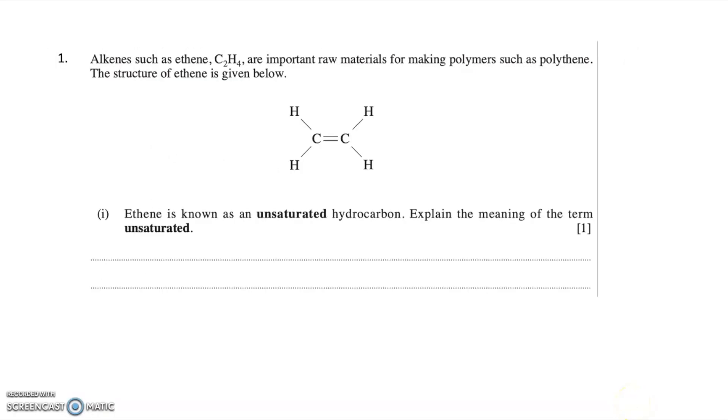Now looking at question one, it says alkenes such as ethene, C2H4, are important raw materials for making polymers such as polythene. The structure of ethene is given below, and then it draws ethene, and it says ethene is known as an unsaturated hydrocarbon. Then explain the meaning of the term unsaturated. Well, unsaturated simply means it contains a carbon-carbon double bond. So if you said it's got a carbon-carbon double bond, you get one mark for this question.